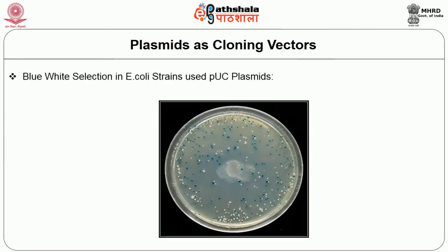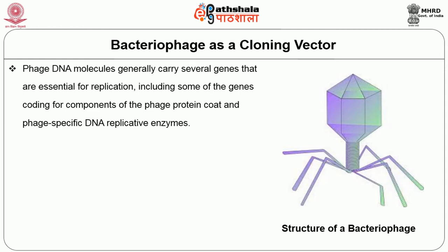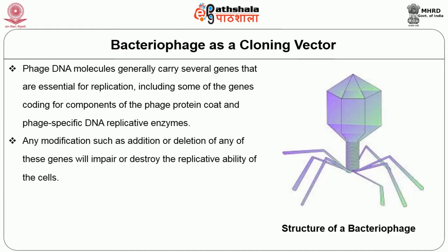You can see the blue-white selection in E. coli strains using PUC plasmids. Coming to the next cloning vector: the bacteriophage. Phage DNA molecules generally carry several genes essential for replication, including genes coding for components of the phage protein coat and phage-specific DNA replicative enzymes. Any modification such as addition or deletion of these genes will impair or destroy the replicative ability of the phage.